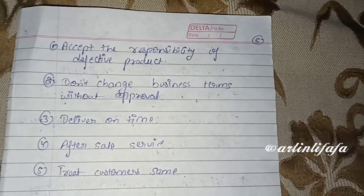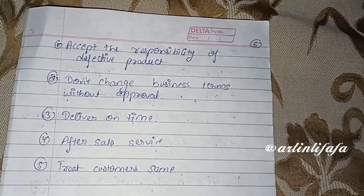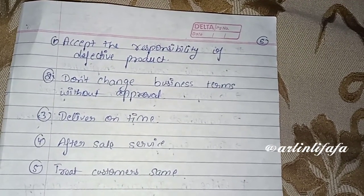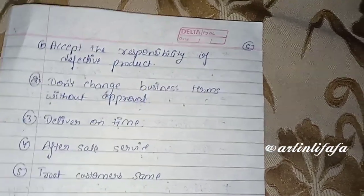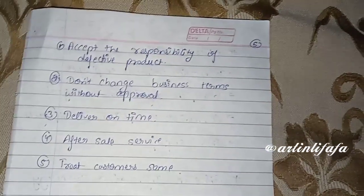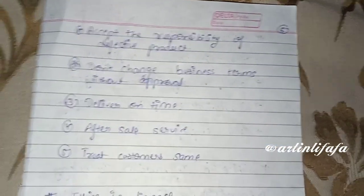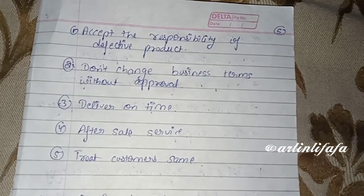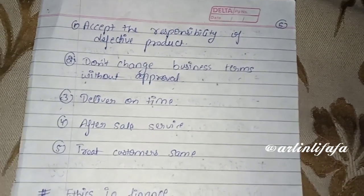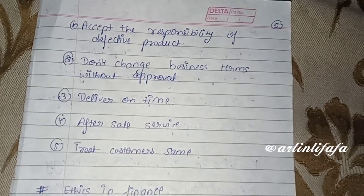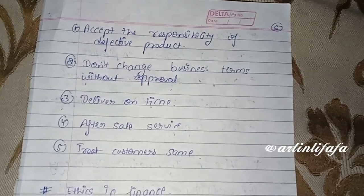If the product broke by accident or it's not the customer's fault, take responsibility. Don't change business terms without approval — changing terms without approval will only harm you. Deliver on time — deliver products to the market timely so customers benefit, and also provide after-sales services.